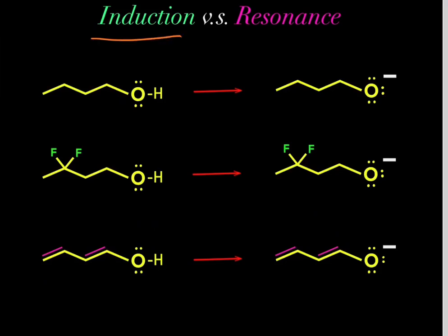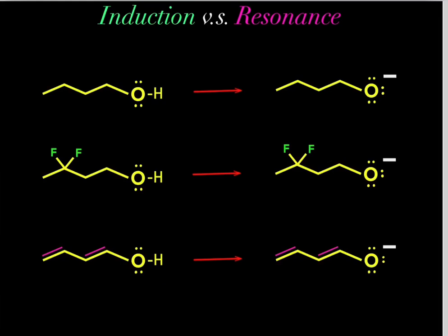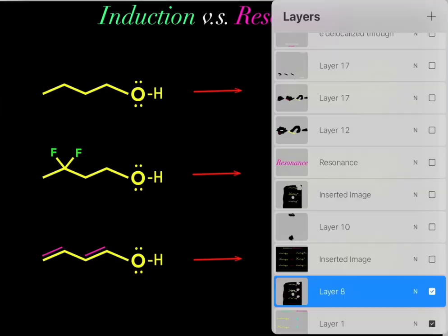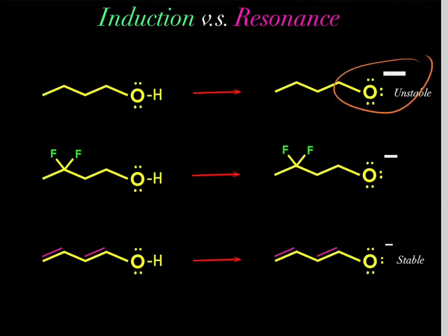In this video, I want to talk about induction versus resonance. So let's say we have these three hydroxyl groups. We know we could deprotonate these hydrogens, and if we deprotonate them, we'd form these conjugate bases. You may wonder which of these three conjugate bases is most stable. This conjugate base is the most stable, and this one's the least stable.